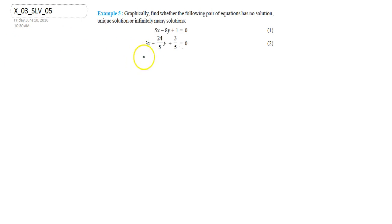In this question, if I multiply 5 by 3 into equation 2, then what will be our equation? 5 by 3 into 3x minus 24 by 5y plus 3 by 5 equals to 0. So it will be 5 by 3 into 3x minus 5 into 5 by 3 into 24 by 5y plus 5 by 3 into 3 by 5 equals to 0.